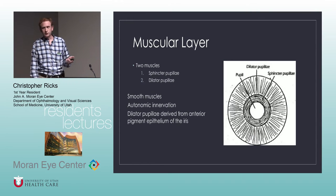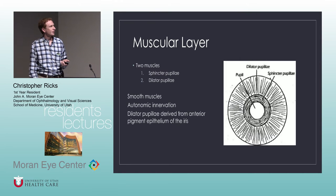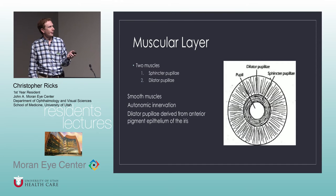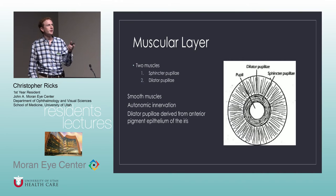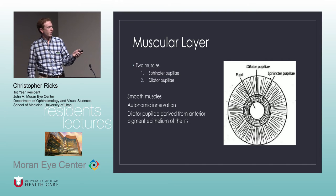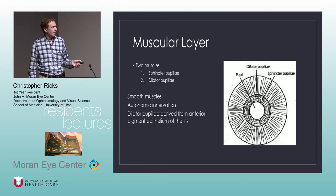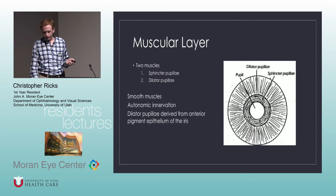Next we have the muscular layer. This is kind of the bulk of the iris anatomy we get in medical school — the sphincter pupillae and the dilator. The dilator is more lateral and the sphincter is more medial. You can see in this drawing the way the fibers run. They have smooth muscle, autonomic innervation, and they're derived from the anterior pigment layer of the iris.